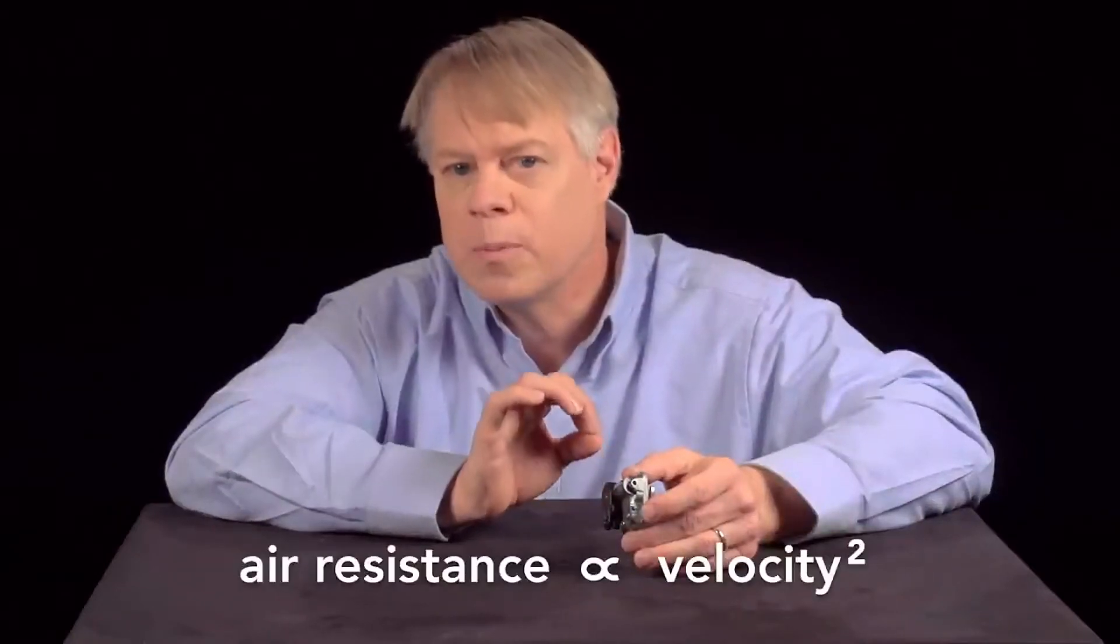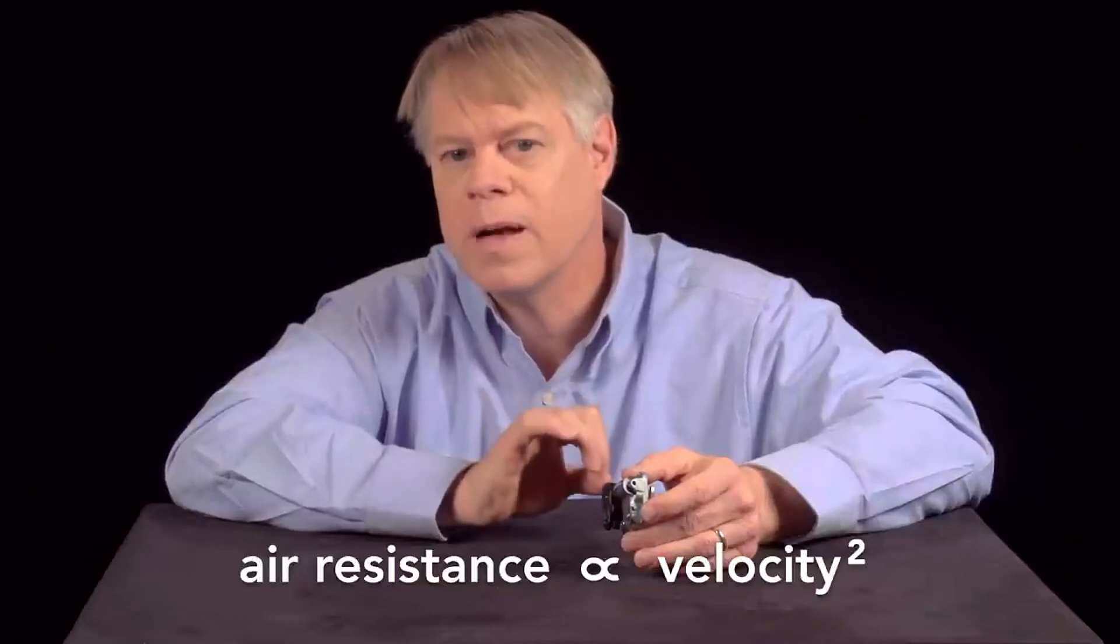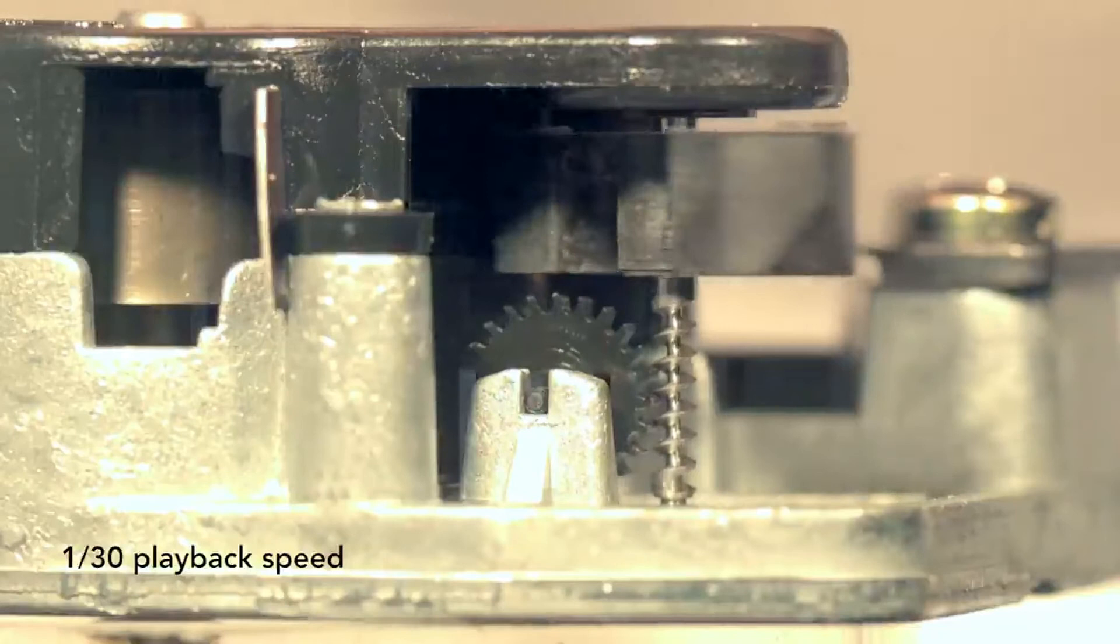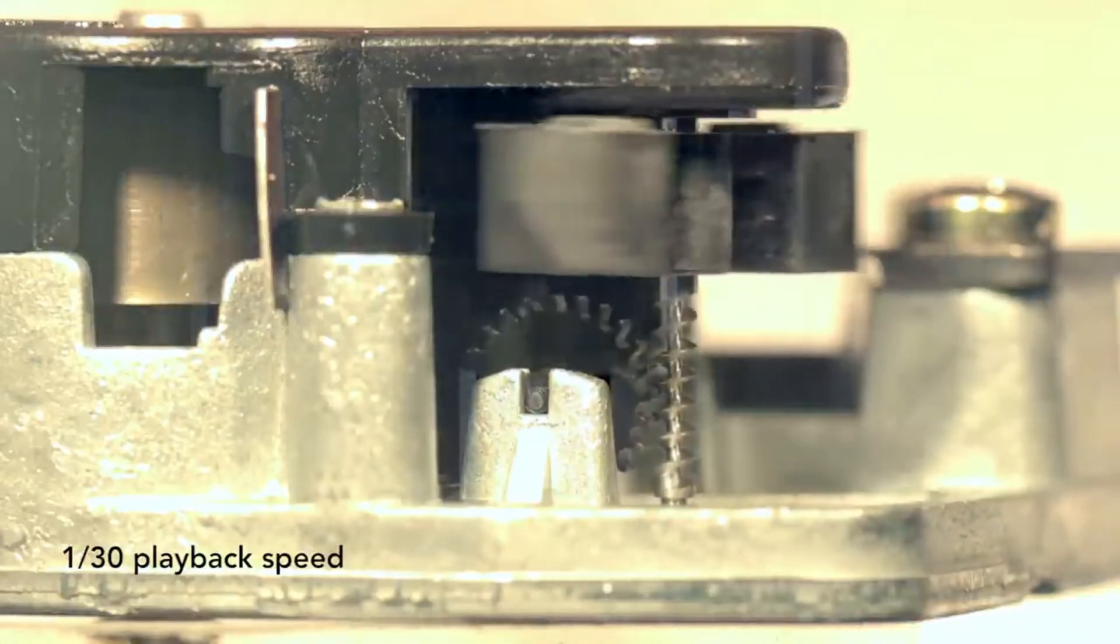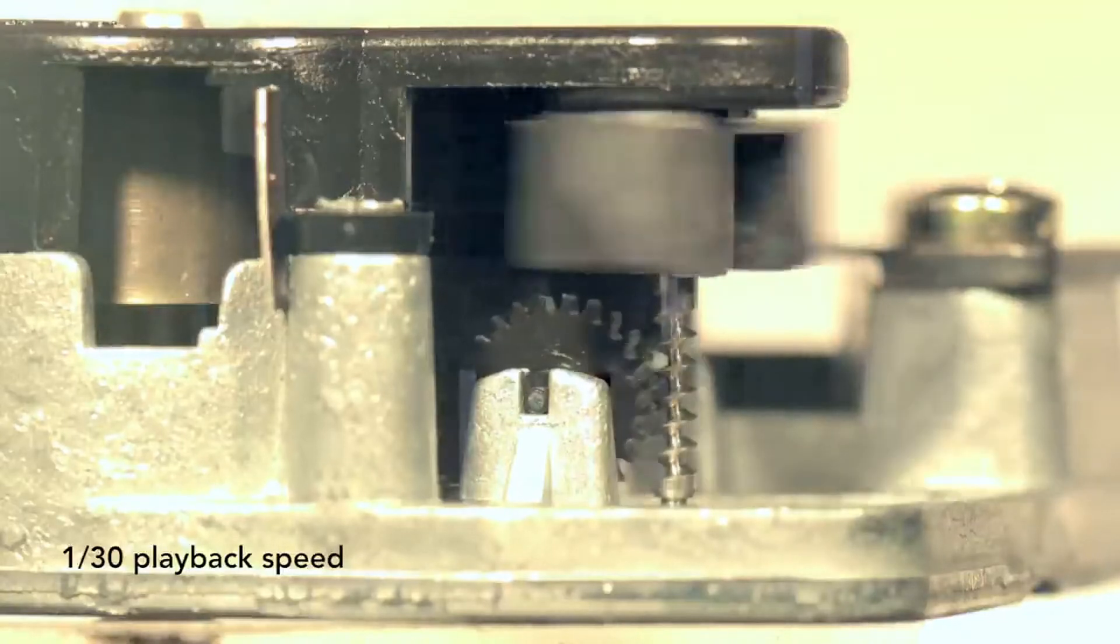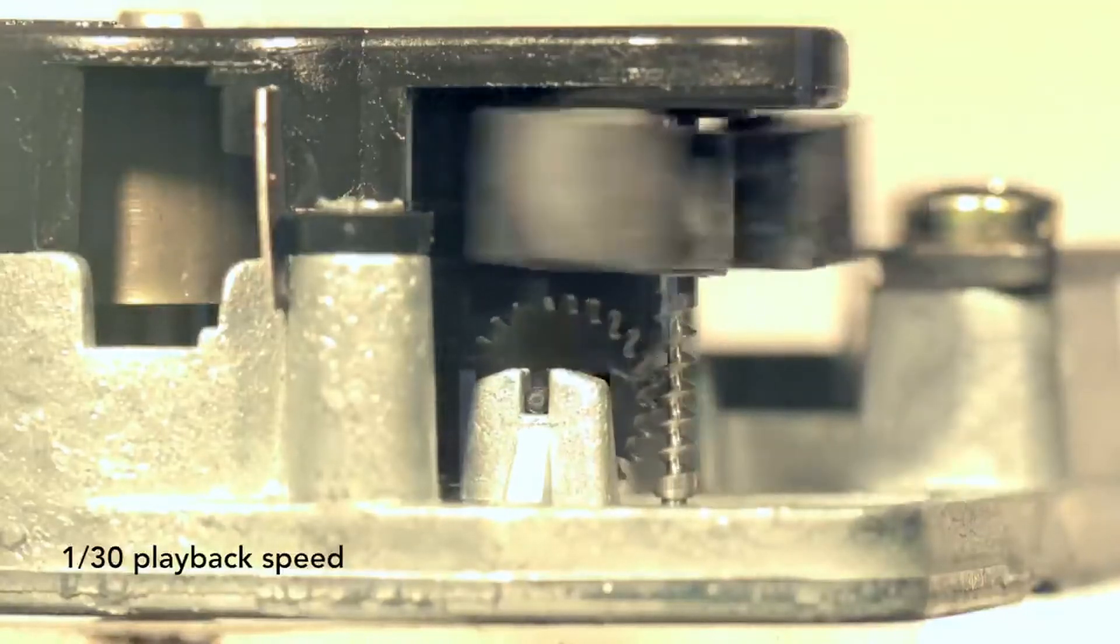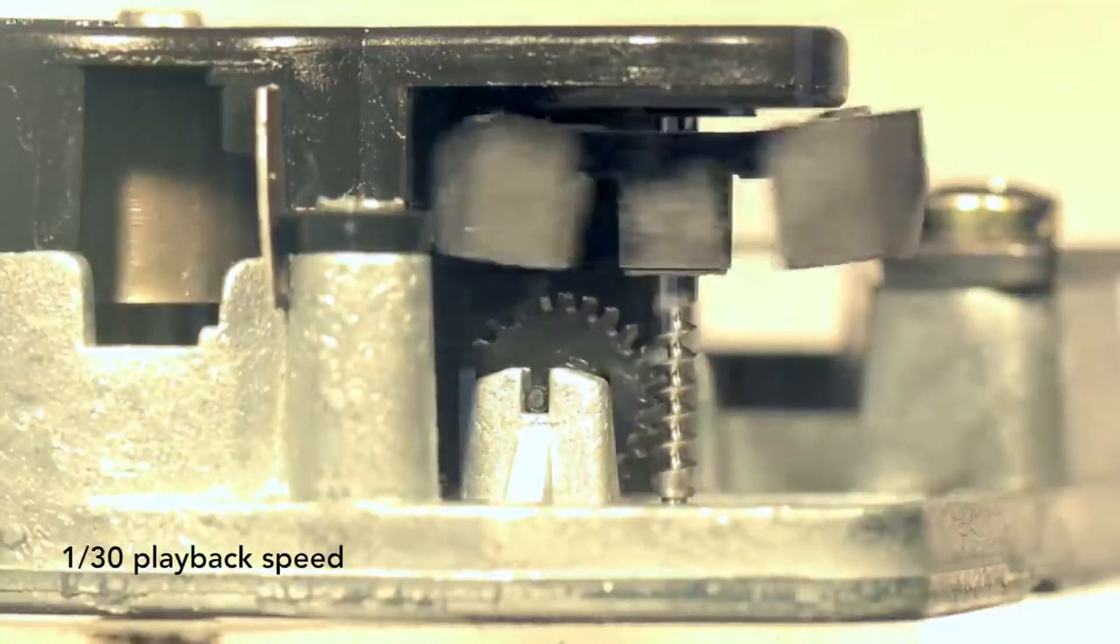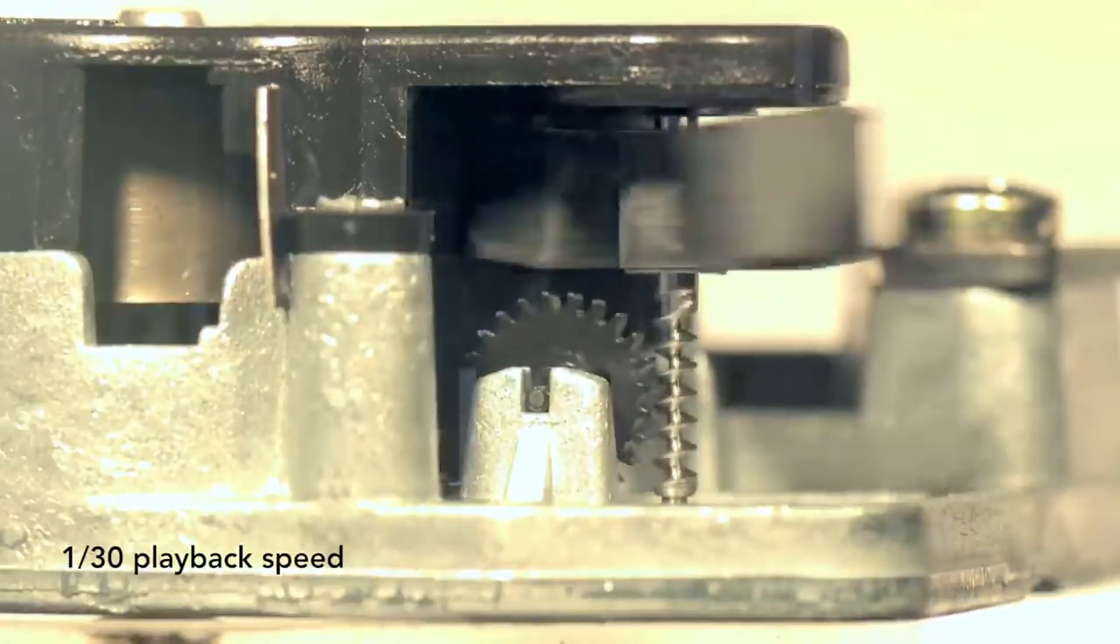The governor uses air resistance to control the release of the energy from the spring. Air resistance is proportional to the velocity squared of the object. When started from rest, the governor encounters little resistance and speeds up readily, but when it spins rapidly, over 3,000 revolutions per minute, air resistance swiftly increases, which prevents it from moving much faster. This action limits the speed of the governor and limits the rotational speed of the drum.